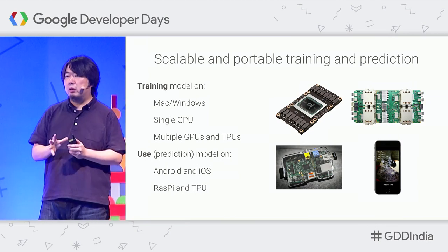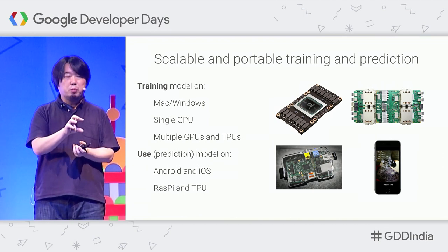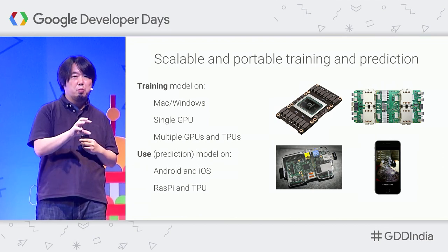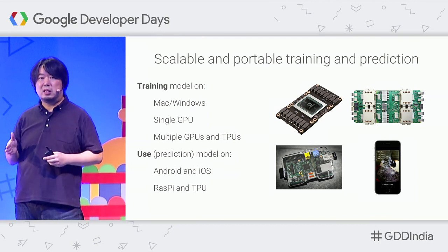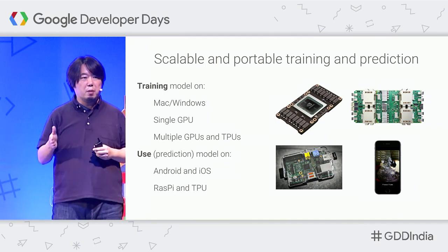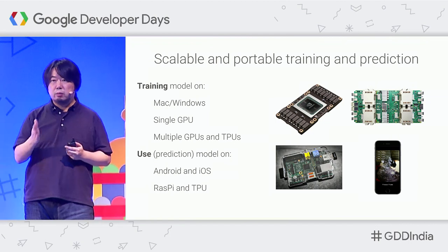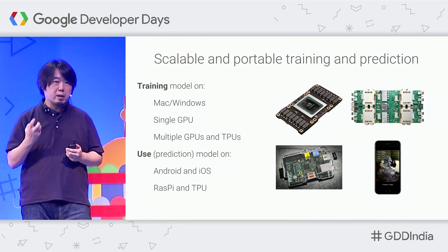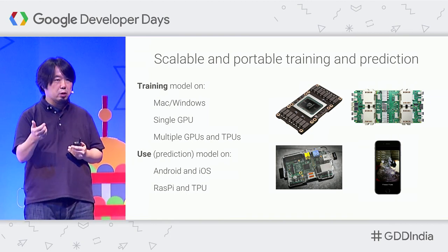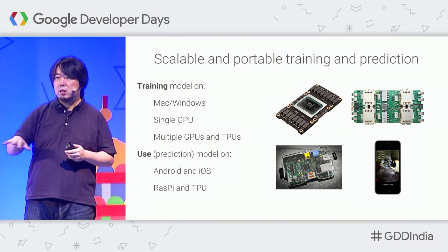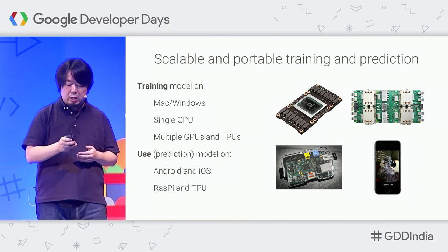Once you have finished training your model, you can copy the model — just tens or hundreds of megabytes of data — to smaller devices such as mobile phones, NVIDIA systems, or Raspberry Pi. Using TensorFlow, especially TensorFlow Lite, you can run your trained model to solve your problem on smartphones or NVIDIA systems in factories or any environment without internet connection.